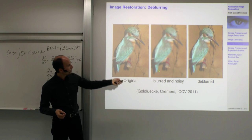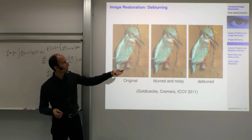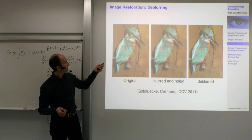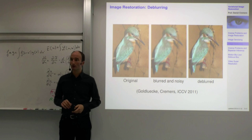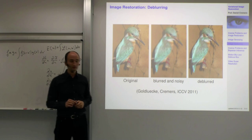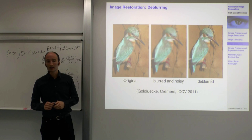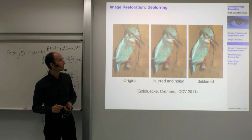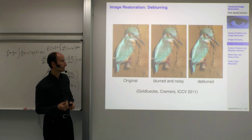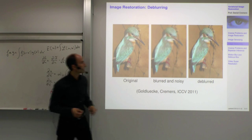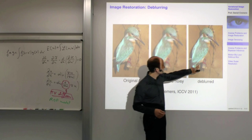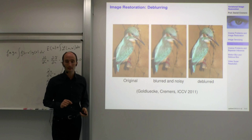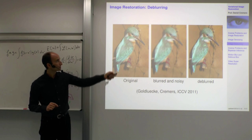The input is a blurred version, and what you can get nowadays is a fairly sharp version — not exactly the original, but much closer. The blurring used a Gaussian kernel with a more sophisticated regularizer. One of the properties you see is that the regularizer preserves sharp discontinuities and boundaries, so the output looks sharper.